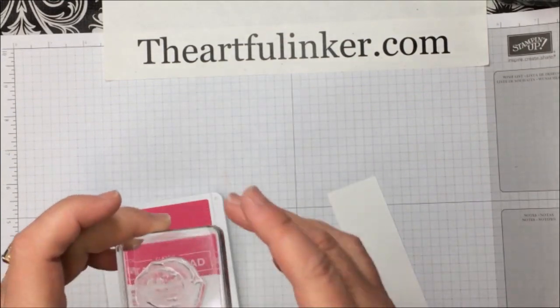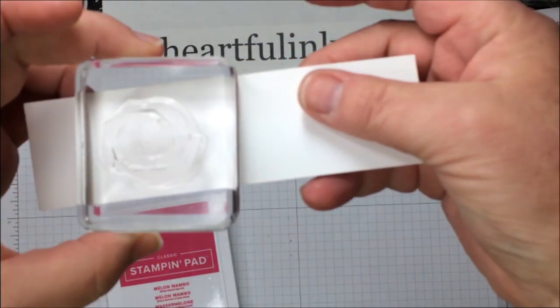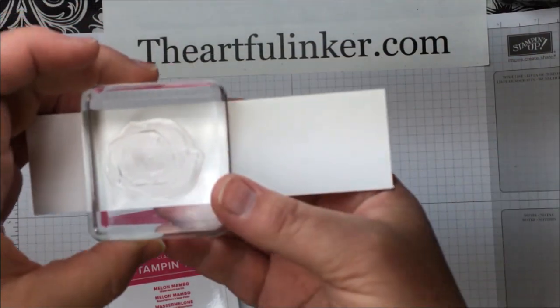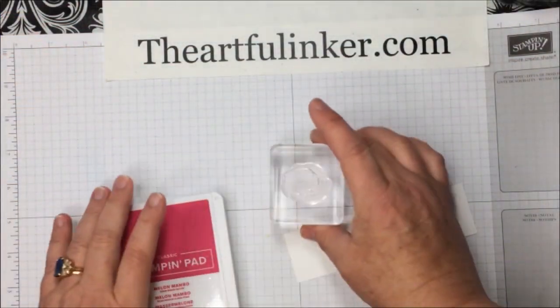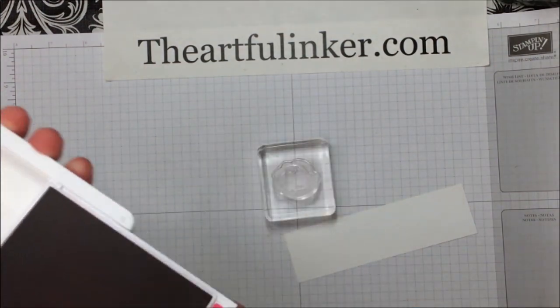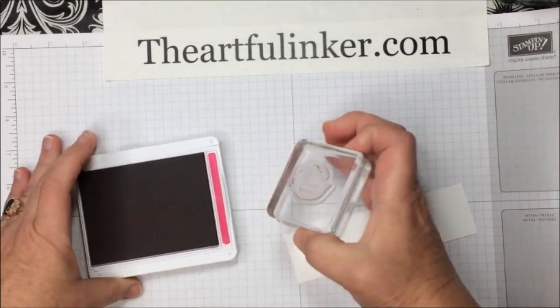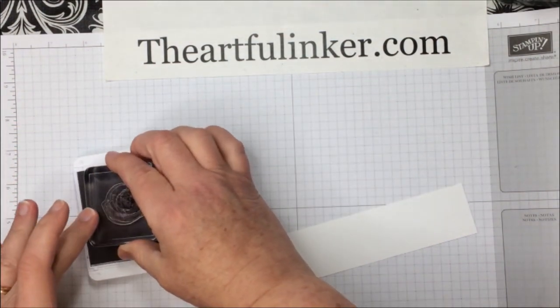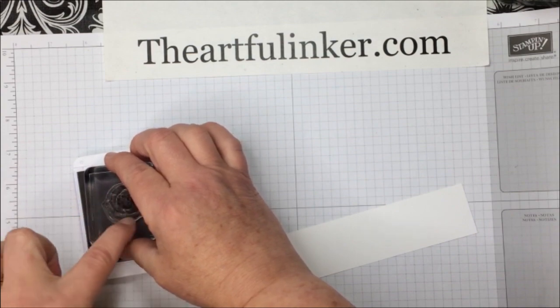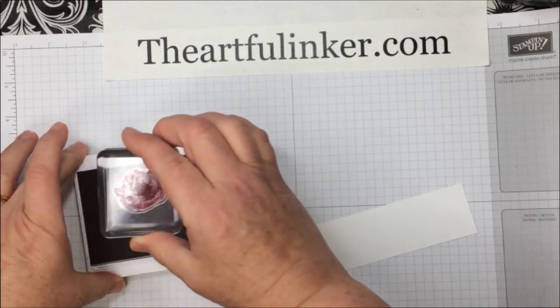I have this small flower from Beautiful Friendship, and I'm going to ink it with Melon Mambo ink. We know that pink and red inks particularly stain.